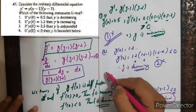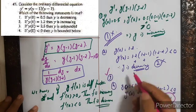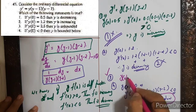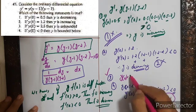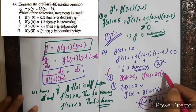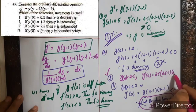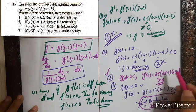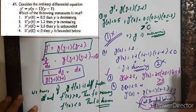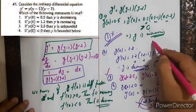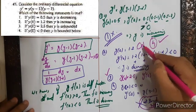For the third option, if y(0) = 2.5, then y'(0) = 2.5 × (2.5 - 1) × (2.5 - 2) = 2.5 × 1.5 × 0.5. This is all positive, so y is an increasing function. Therefore y increases and it is unbounded. So option 3 is true — only option 3 is correct.